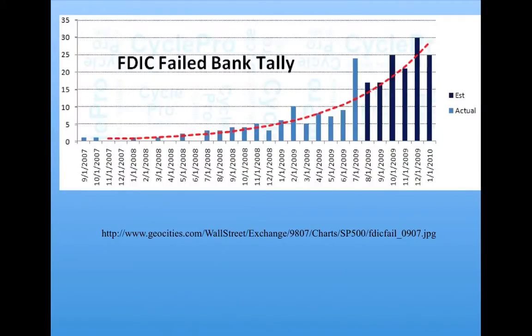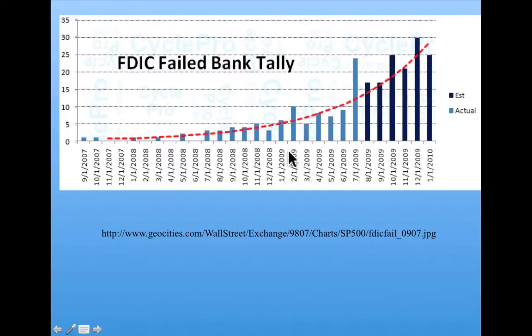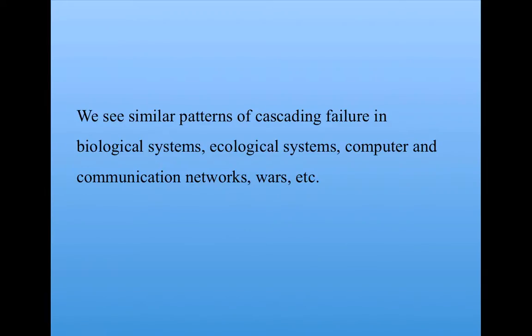Cascading failure can also affect economic systems such as banks. In the years from 2007 to 2010, there was a sort of domino effect of banks failing. Once one bank fails, it causes an effect throughout the bank network. If the bank network is closely interconnected and has this cascading failure possibility, we can get this kind of cascade of bank failures. We see similar patterns in all kinds of systems, ranging from the body to ecological systems, computer and communication networks, wars, and so on.